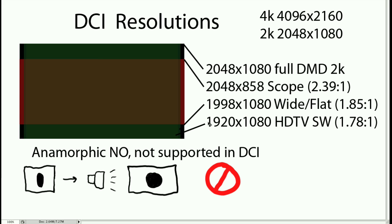A lot of people produce content in HD — if you're doing a typical low-cost production you usually come out to 1920 by 1080. What you'd normally do is do a very small resize up to 1998 by 1080 and drop off a little bit on the top and the bottom. That little bit lost from 1920 to 1998 is basically all that really happens when you're going from an HD master to a DCI distribution master.